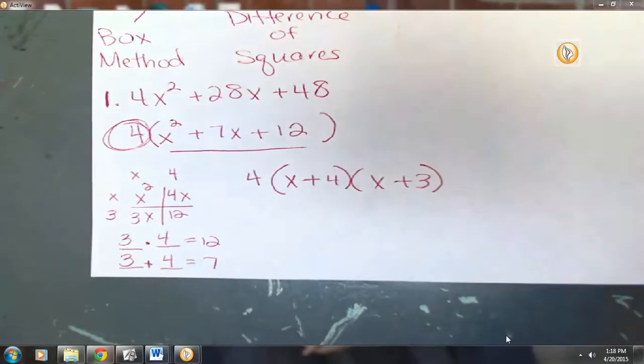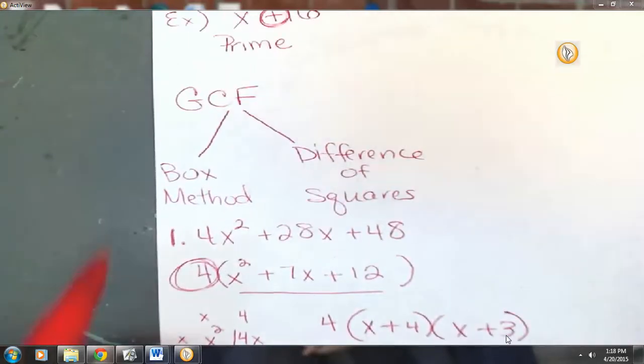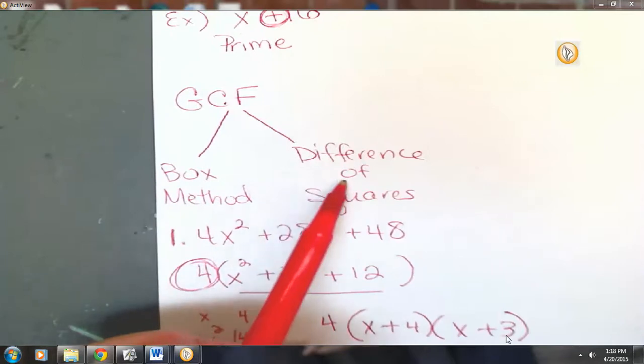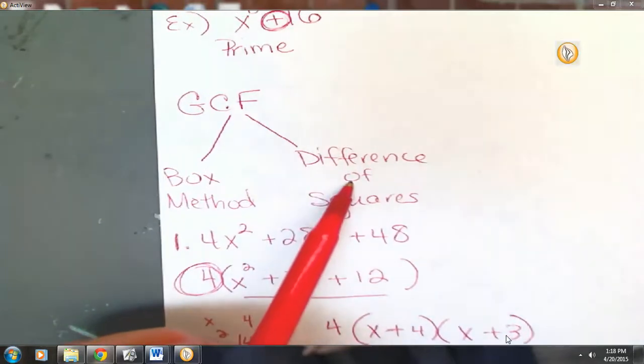There are a couple of problems on this page that you're going to need to do greatest common factor first, and then you'll do difference of squares. So you might want to put a note there. Do greatest common factor first. And it's kind of like what we just wrote down here with this little pyramid. Greatest common factor first, and then from there, you're either going to do box method or difference of squares, if you have the necessary items to do those.